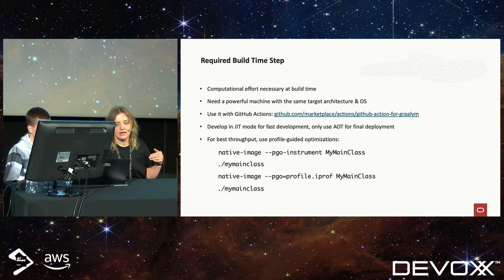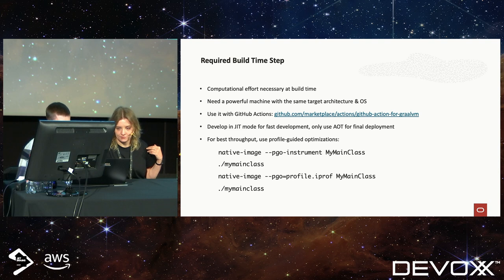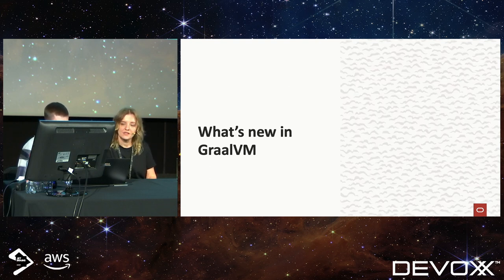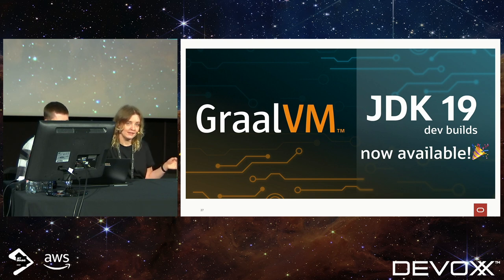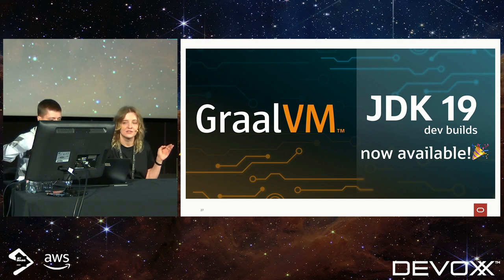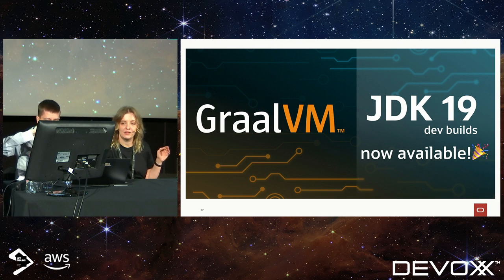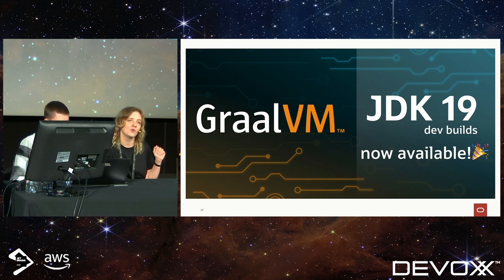A few things about what's new in GraalVM. We now have GraalVM JDK 19 builds available as developer builds from our GitHub repo, which will also be available with our next 22.3 release. We're particularly excited about virtual threads — Project Loom — and we want to show a demo of using virtual threads on GraalVM in both JIT and native image mode.